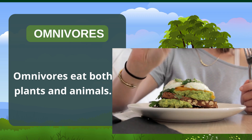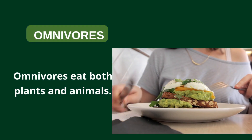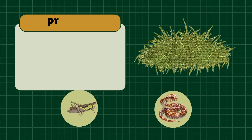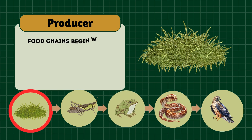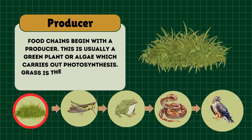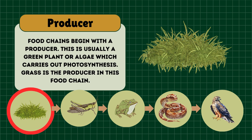Now let's see how all these components build a food chain. Food chains begin with a producer, which is usually a green plant or algae that makes its own food with the help of the sun's energy. Grass is the producer in this food chain.